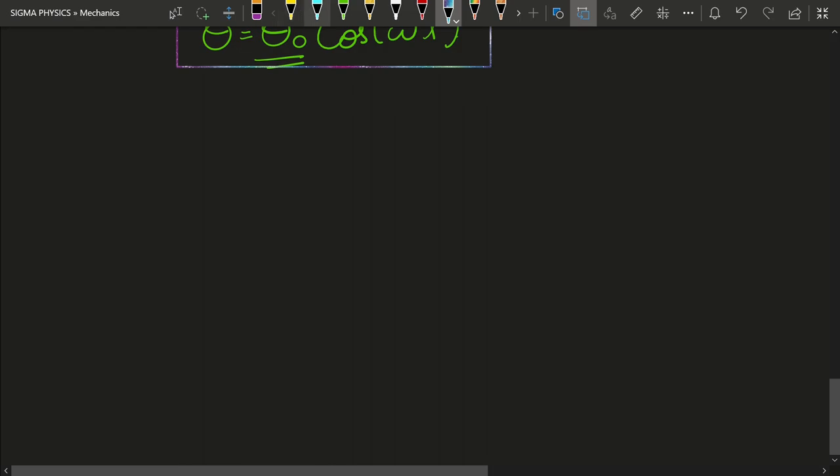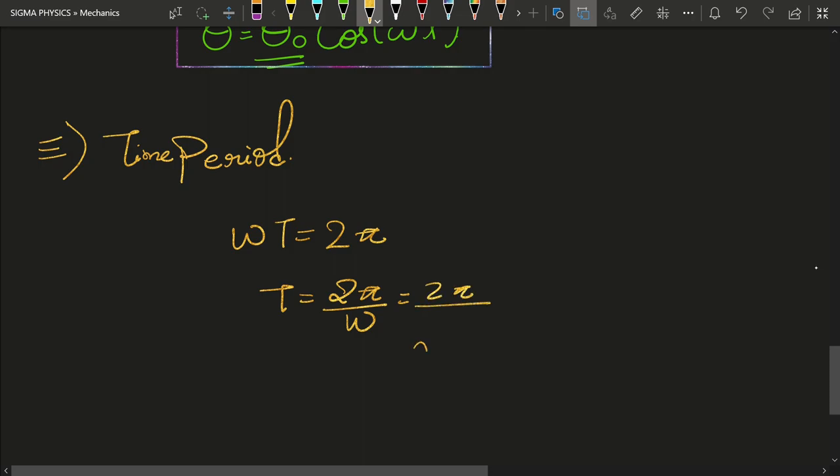Next thing that we have to find about this system is its time period. Every harmonic oscillator has a time period, and for this harmonic oscillator—the simple pendulum—we have to find its time period. You know the relationship ωT = 2π, and you can find the time period as 2π/ω. We know that ω = √(g/L), and hence the time period of a simple pendulum is 2π√(L/g).